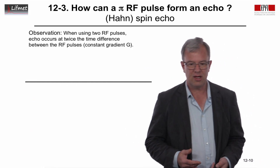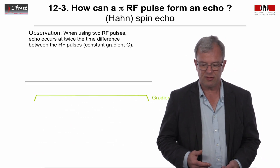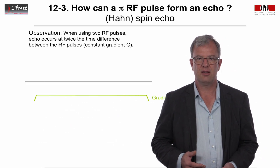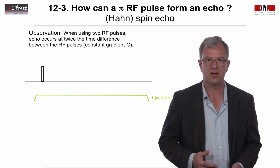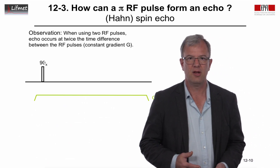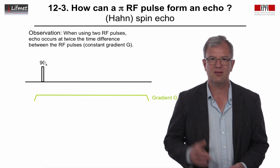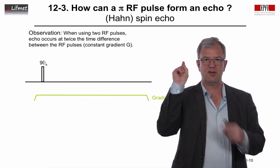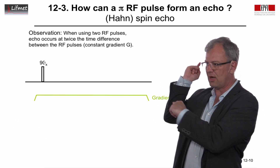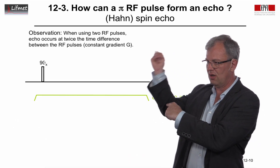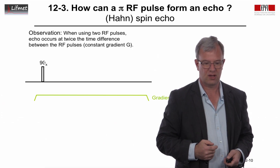We'll look here at time. We'll now pretend that we've turned on the gradient along Y, and this is always on — we'll just consider it is always on. We'll have a 90-degree pulse. This 90-degree pulse, the B1, is applied along the X axis, so it rotates the magnetization onto the Y axis.